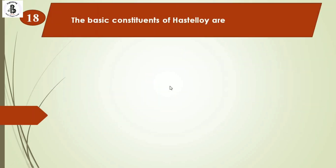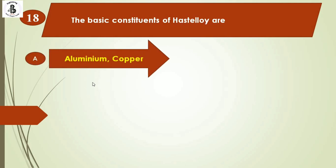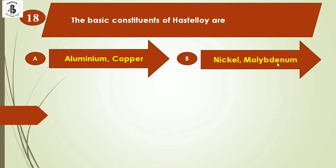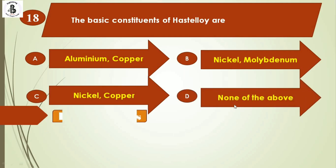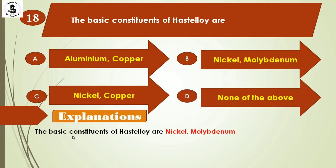Question 18: The basic constituents of Hastelloy are — Option A: aluminum-copper, Option B: nickel-molybdenum, Option C: nickel-copper, Option D: none of the above. The basic constituents of Hastelloy are nickel and molybdenum. The right answer is Option B.